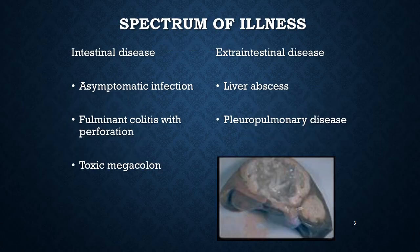There are different spectrums of the illness. It ranges from asymptomatic infection to symptomatic non-invasive infections, proctocolitis, fulminant colitis with perforation, toxic megacolon, chronic non-dysenteric colitis, ameboma, and perianal ulceration.